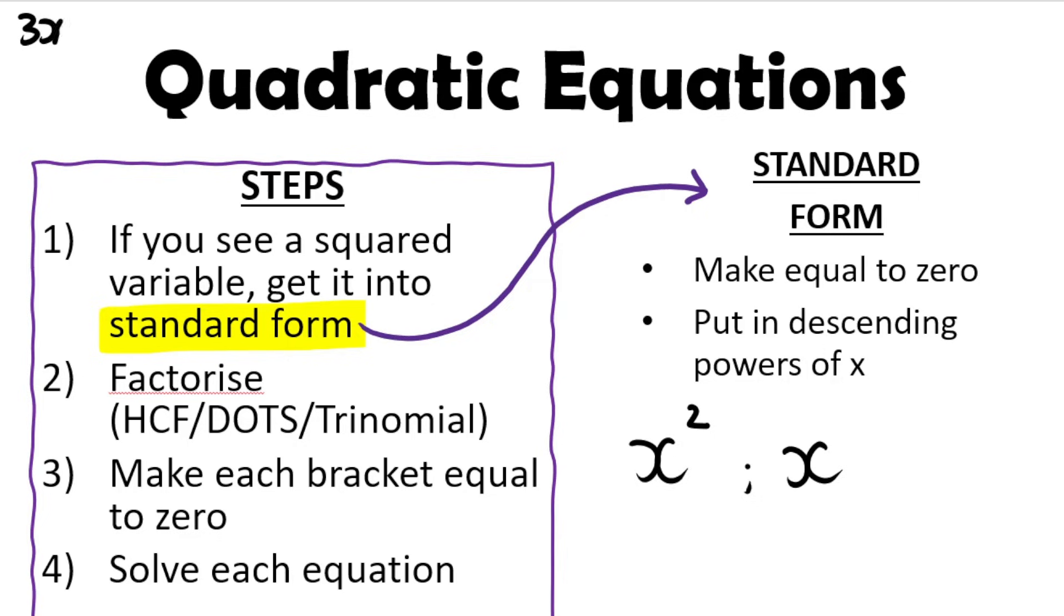For example, it doesn't really help in some cases, you'll see why later, to have the equation look like this. We should put this term first. Then, once it is in standard form, we factorize the expression. We can use highest common factor, difference of two squares, all trinomials. And then we make each bracket equal to zero, and we solve each equation. Let me show you what I mean.